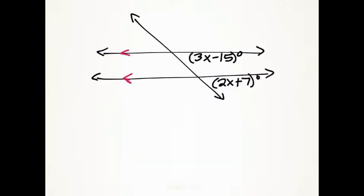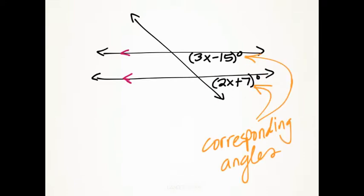As far as application goes for knowing corresponding angles and alternate interior angles and the others, here we have two parallel lines indicated with the little arrows. We've got a measurement for one angle and a measurement for another angle. I know those angles are corresponding angles, and since I know that they're corresponding angles, they're going to be congruent angles.